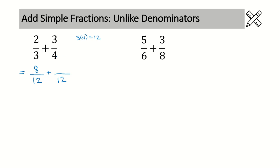Do the same thing for the second fraction. Compare denominators: going from 4 to 12 means multiplying by 3. So multiply 3 times 3 to get 9. Now we have common denominators. Just a reminder — we never add or subtract the denominators, so write it in. Then add up your numerators: 8 plus 9 is 17. This is an improper fraction, so we need one more step to change it to a proper mixed number. That gives us 1 and 5 over 12. This is our final answer.